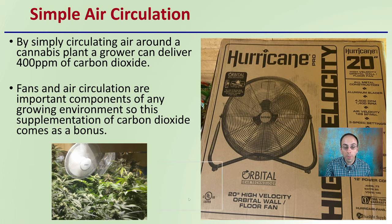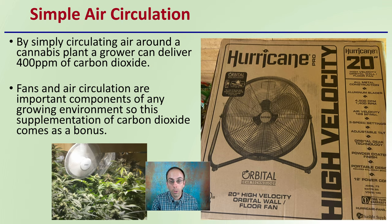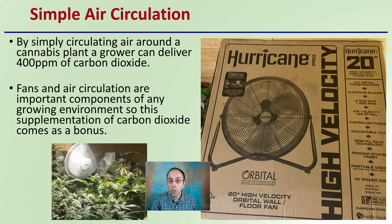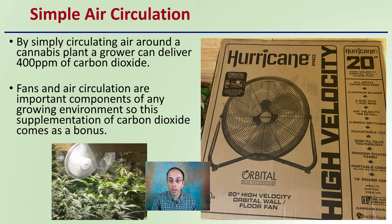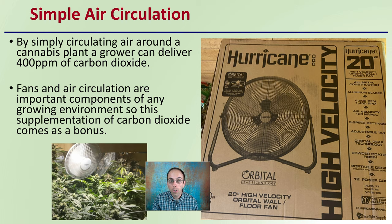If we are growing in atmospheric conditions, something we want to keep in mind is air circulation. By simply circulating air around the cannabis plant, a grower can deliver 400 parts per million of carbon dioxide. Fans and air circulation are important components of any growing environment, so this supplementation of carbon dioxide comes as a bonus. You don't want the air to be stagnant, because plants can consume the carbon dioxide and actually reduce those levels. By circulating air, particularly bringing outside air in, it's a great way to ensure they're constantly getting that normal ~400 parts per million atmospheric level.